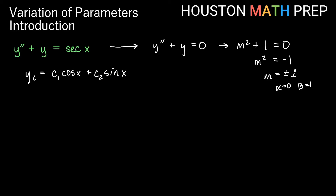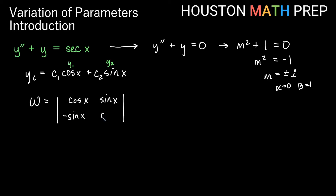We use y1 = cos(x) and y2 = sin(x) from the complementary function to calculate our Wronskian. The first row of the matrix is cos(x) and sin(x); the second row is −sin(x) and cos(x). The determinant is cos²(x) minus (−sin²(x)), which gives cos²(x) + sin²(x) = 1 by the Pythagorean identity. So our Wronskian W = 1.